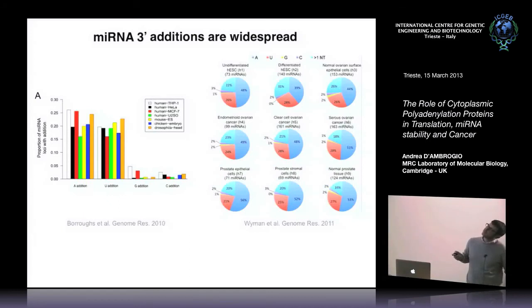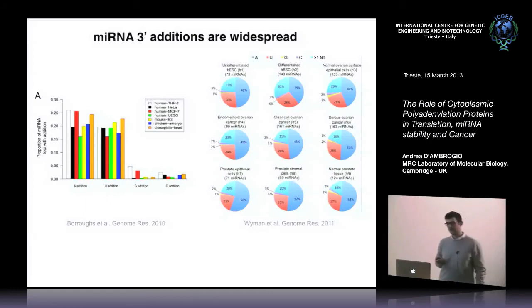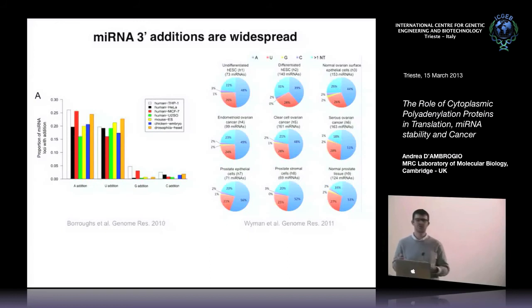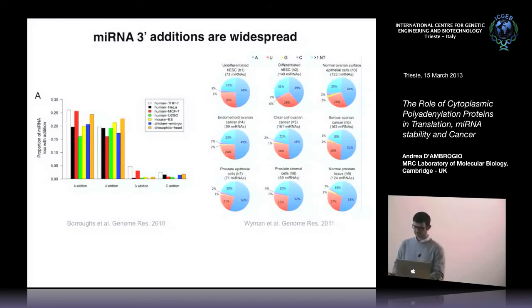This data also shows that A, G, and U additions might be developmentally regulated, or that different tissues have different regulation of these non-templated additions.